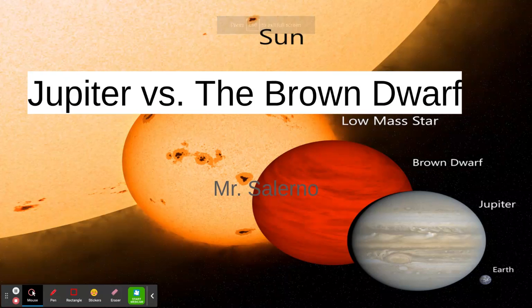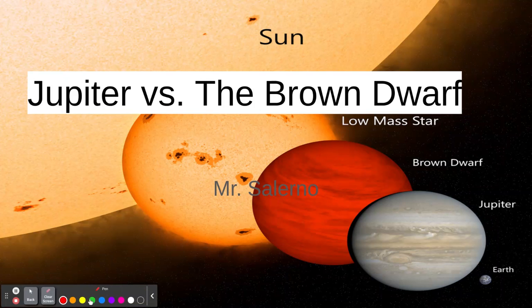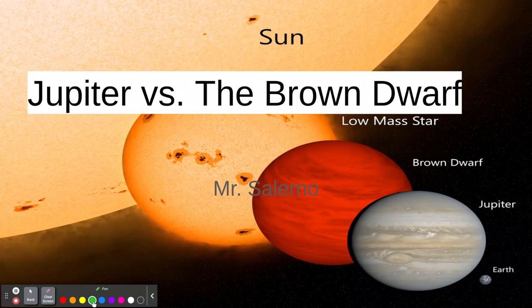Okay, here's our video, the story of Jupiter versus the brown dwarf. Let's get our pen ready here. You can see Jupiter in the corner over there, right over here. And then we have this low-mass star, and the low-mass stars are red dwarfs.